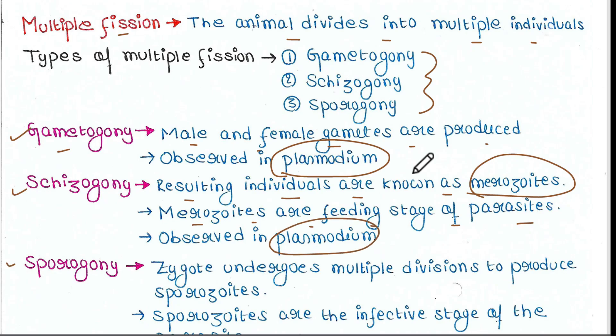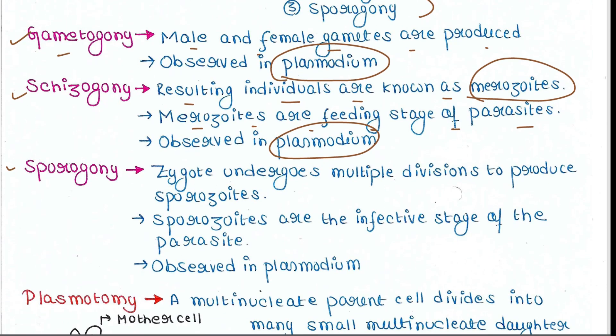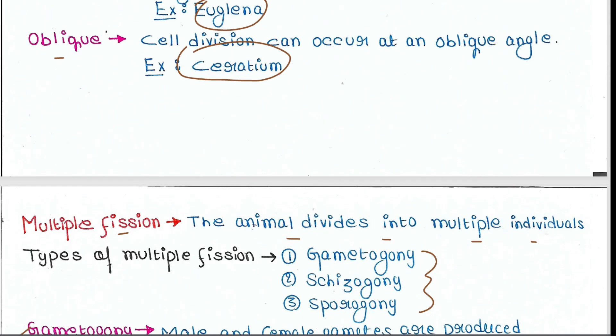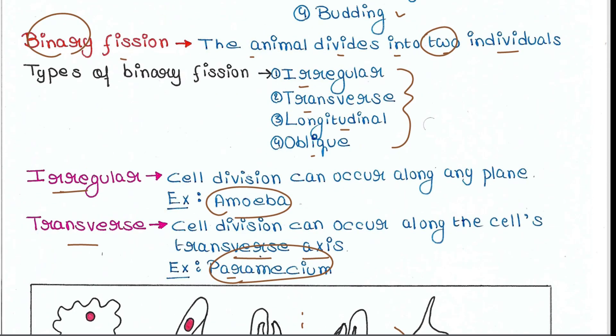Next is sporogony. Here, the zygote undergoes multiple divisions to produce sporozoites. Sporozoites are the infective stage of the parasite. This is again observed in plasmodium. So these are the different types of multiple fission.